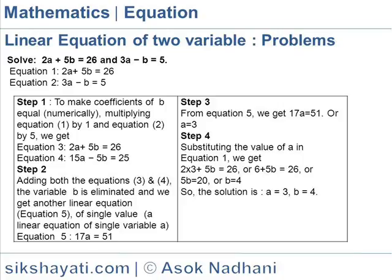Next problem: Solve 2a plus 5b equals 26 and 3a minus b equals 5. We label these as equation one: 2a plus 5b equals 26, and equation two: 3a minus b equals 5. Step one: to make the coefficient of b numerically equal, we multiply equation one by 1 and equation two by 5.